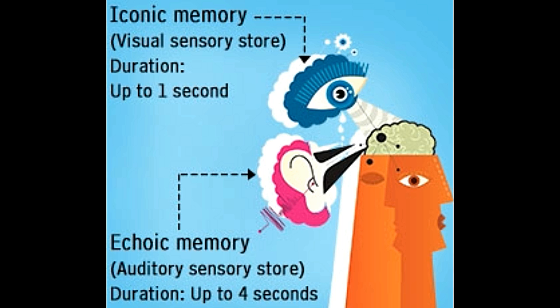The terms iconic memory and echoic memory refer to the forms of sensory memory. Buzzle provides information on the difference between iconic memory and echoic memory.